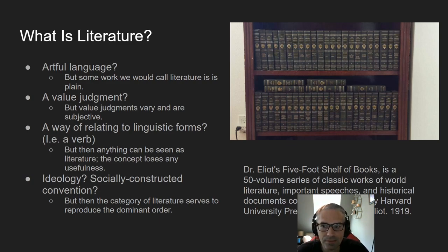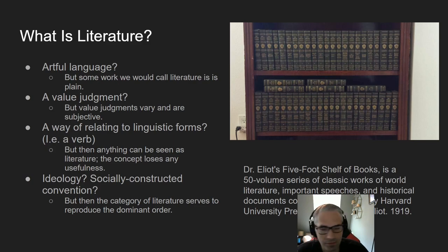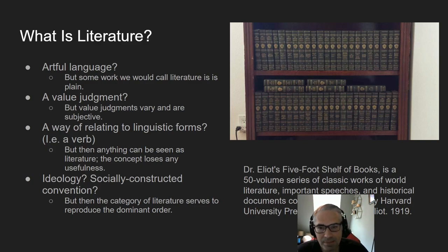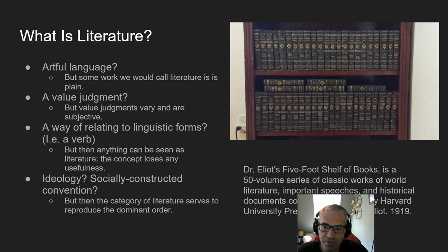How about when we call something literature, we're making a value judgment. We'll say, oh, Shakespeare's literature, but R.A. Salvatore's Drizzt Do'Urden Dark Elf Dungeons & Dragons novels, they're not literature. Some people are comfortable saying Pulitzer Prize winning novels are literature, but pulp fiction from the 1930s is not. Most people are intuitively okay with that, but these value judgments vary and are subjective.